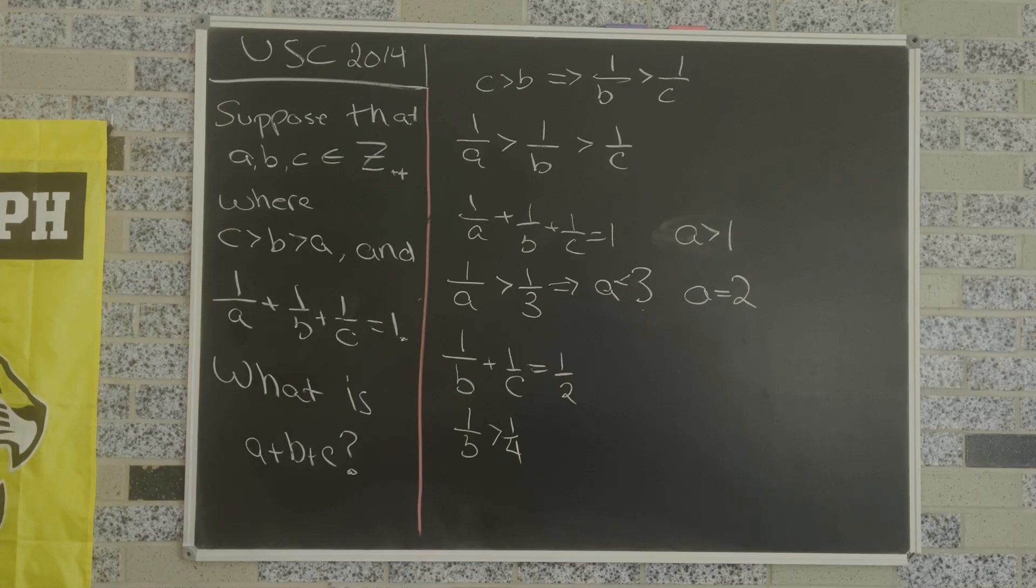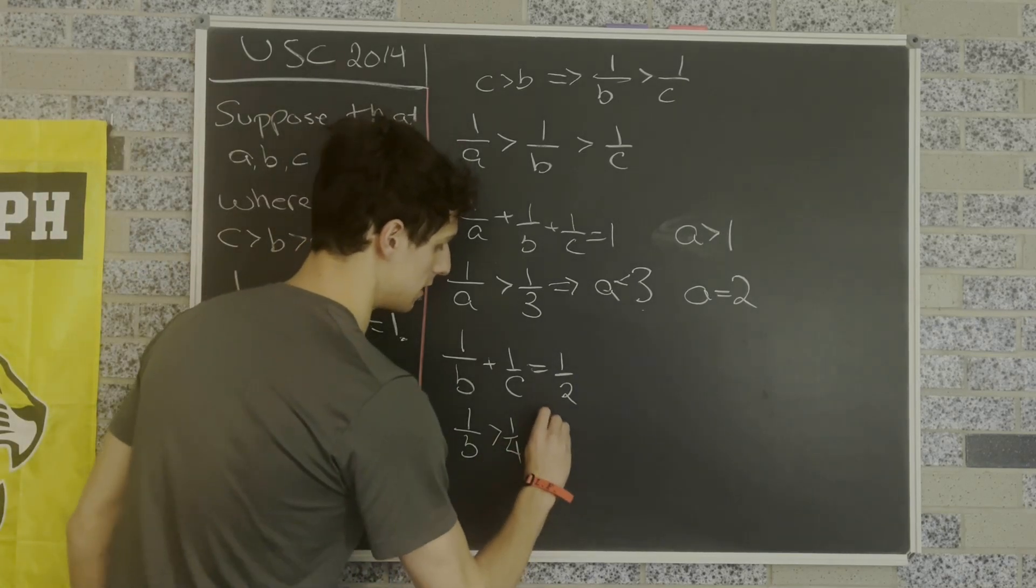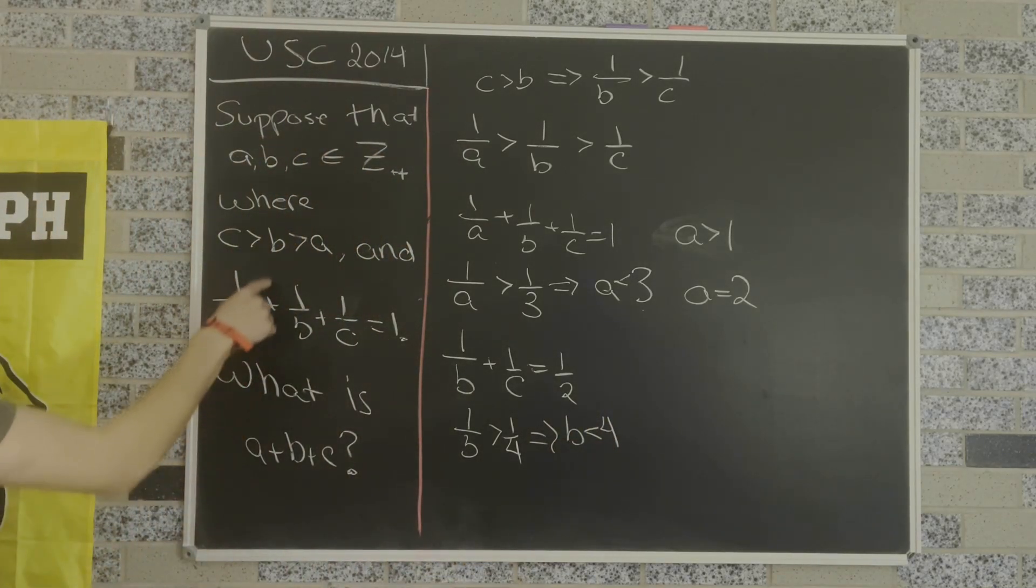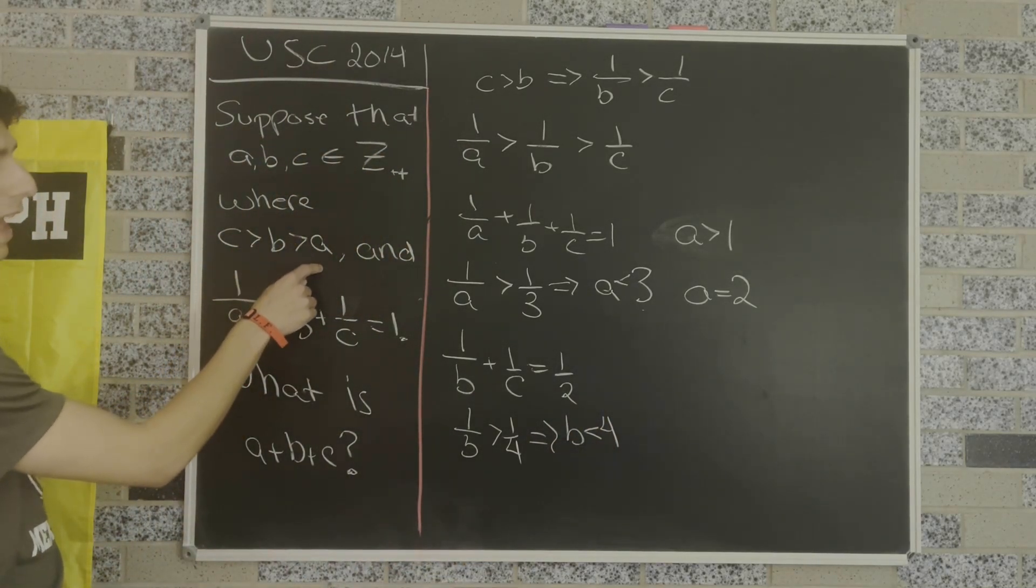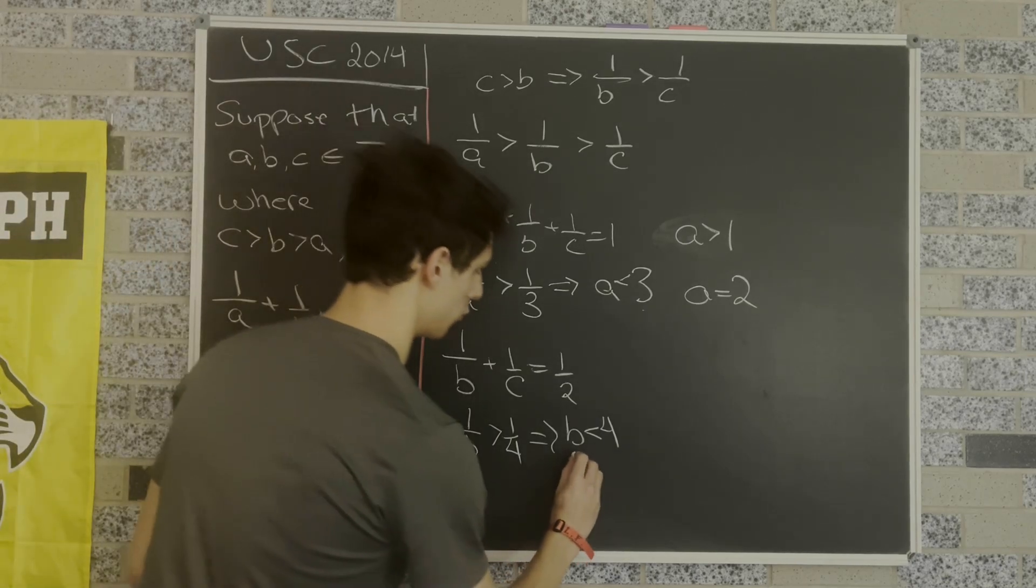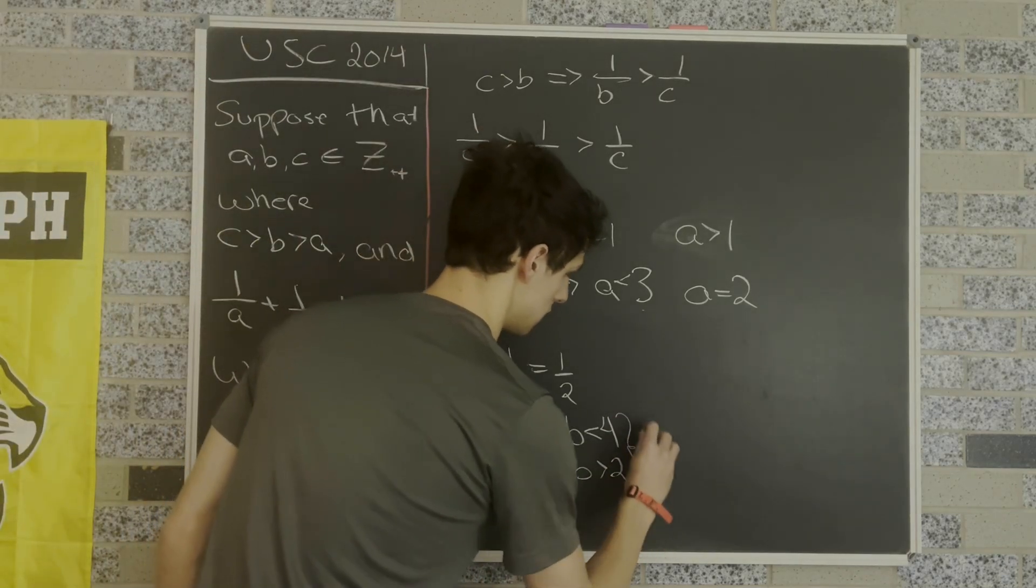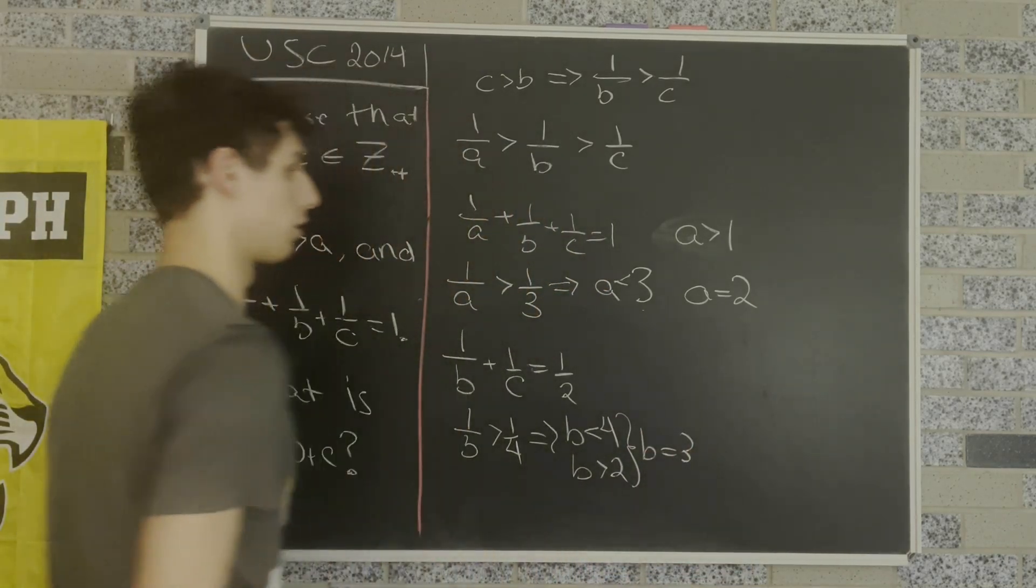So we know it has to be greater than 1 over 4, but that means B is less than 4. And from our very first inequality, we know that B has to be greater than A, so B is greater than 2. The only positive integer that satisfies both of these tells us that B equals 3.